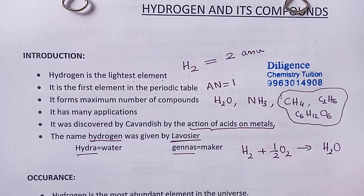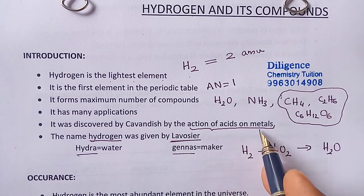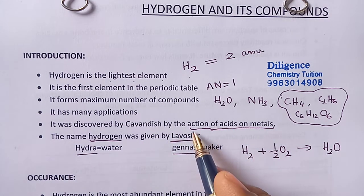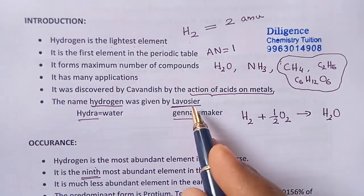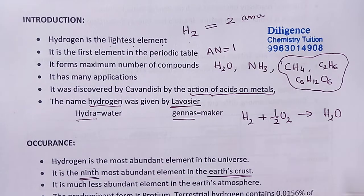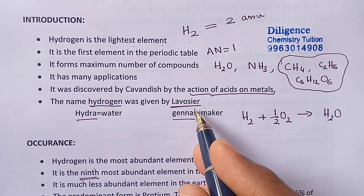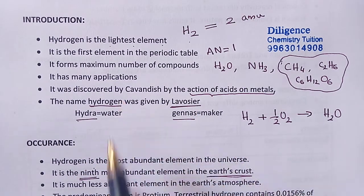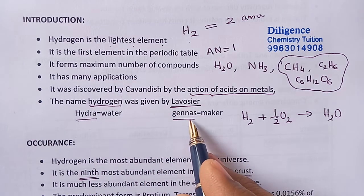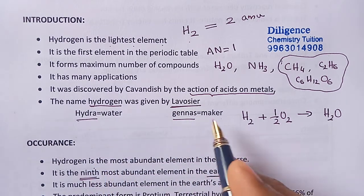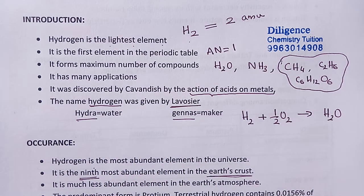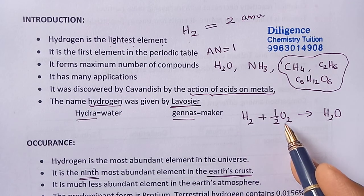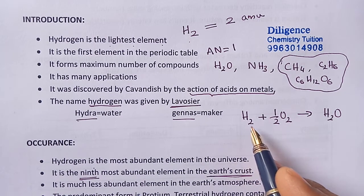Hydrogen was discovered by Cavendish by the action of acids on metals. The name hydrogen was given by Lavoisier. In the word hydrogen there are two parts: hydra and genus. Hydra means water, genus means maker. So hydrogen is nothing but water maker, because when hydrogen reacts with oxygen it forms water.